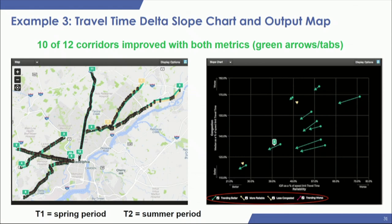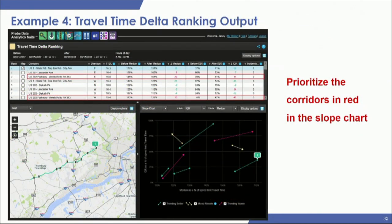There's also another visualization option: a bar chart that shows an individual column across the multiple corridors. In a more realistic example where things are changing, you might have two degrading, four improving, and two with mixed results.